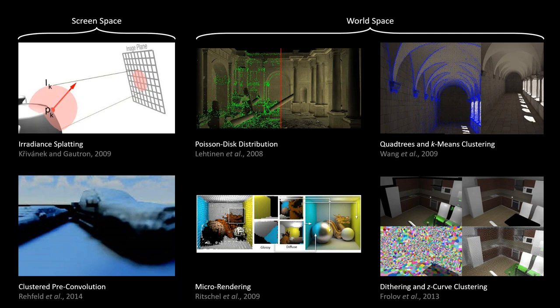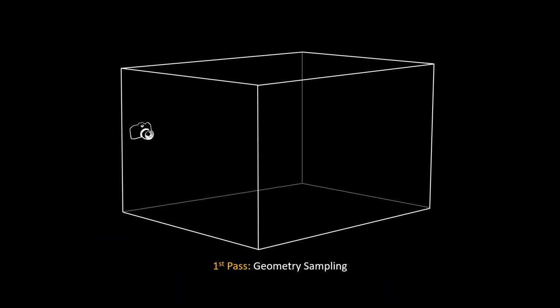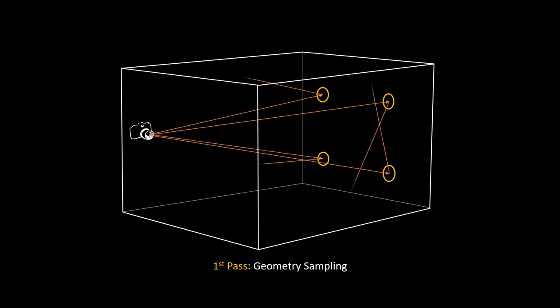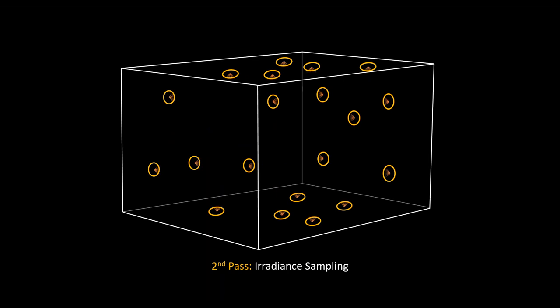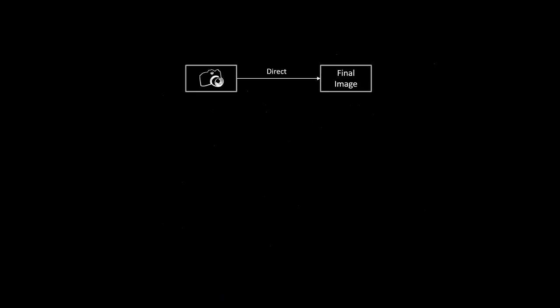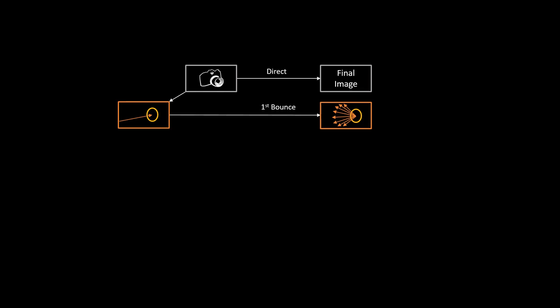For world-space solutions, the approach is: first perform a geometry sampling pass—send out rays to bounce around the space and identify which points might be relevant—then perform diffuse sampling at those points. Alongside the direct lighting calculation, a geometric sampling pass is done, and diffuse sampling results populate an irradiance cache, which is then used to create the final image.